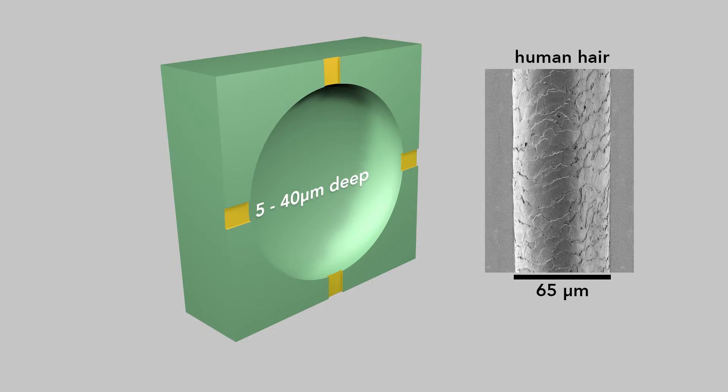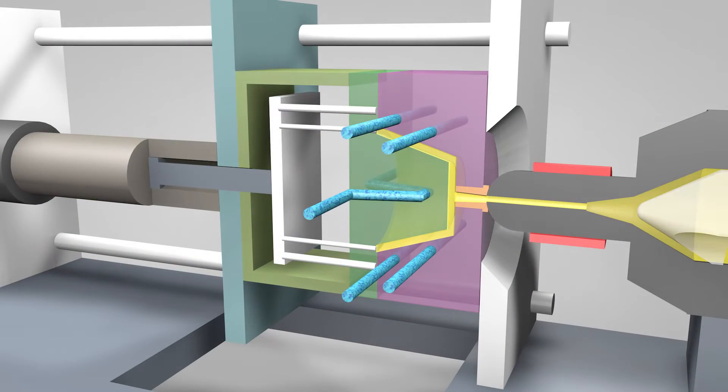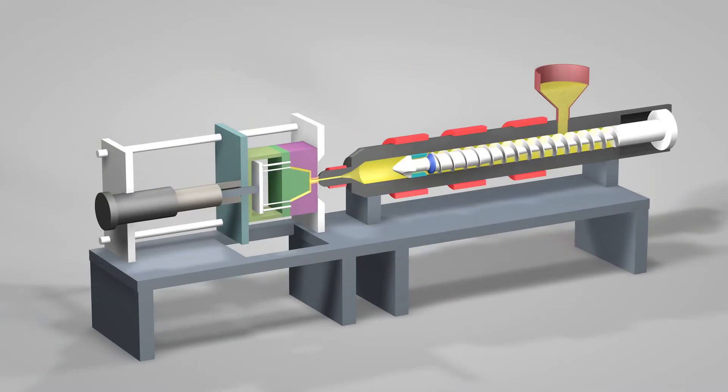To speed the plastic solidification, coolant, typically water, flows through channels inside the mold just beneath the surface of the interior. After the injected part solidifies, the mold opens.